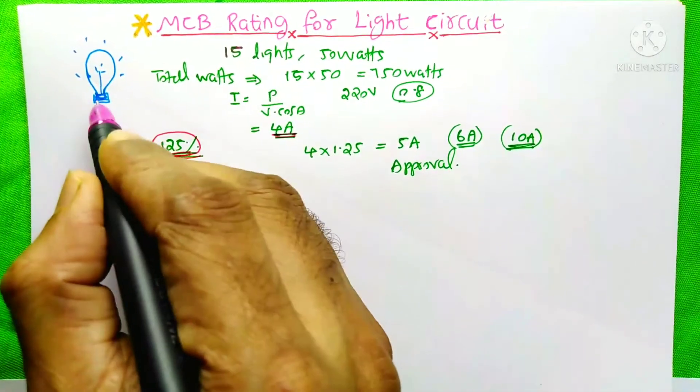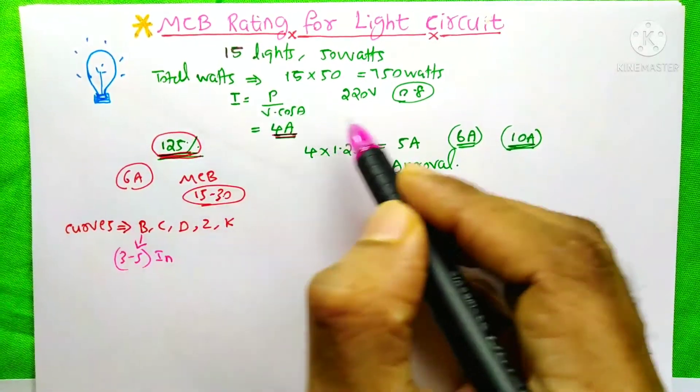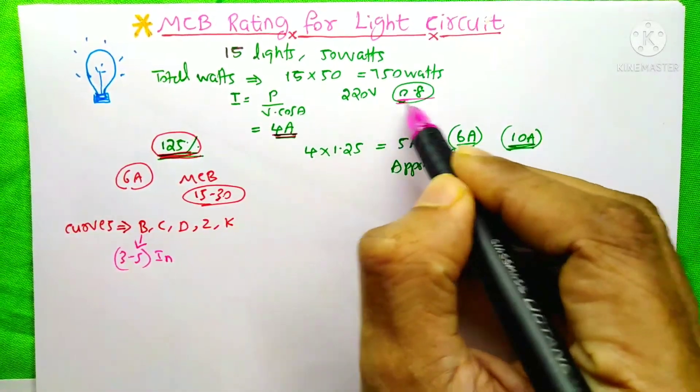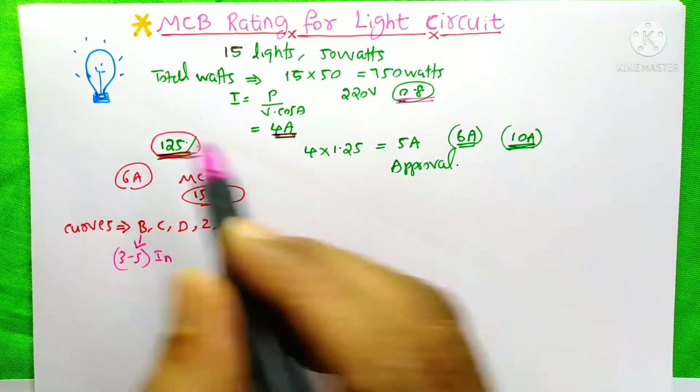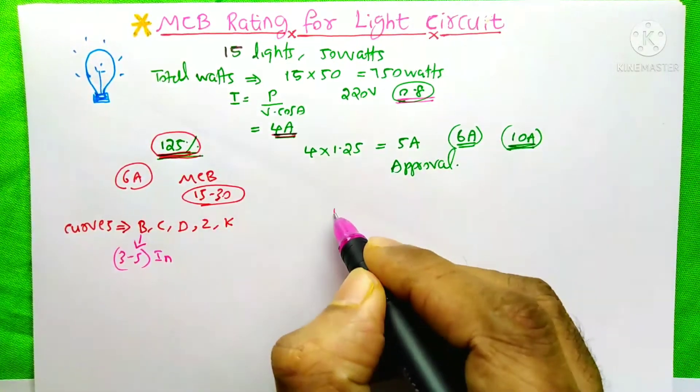Our LED bulbs are inductive in nature. I took the power factor as 0.8, which means at the starting time of your circuit there may be some inrush current.